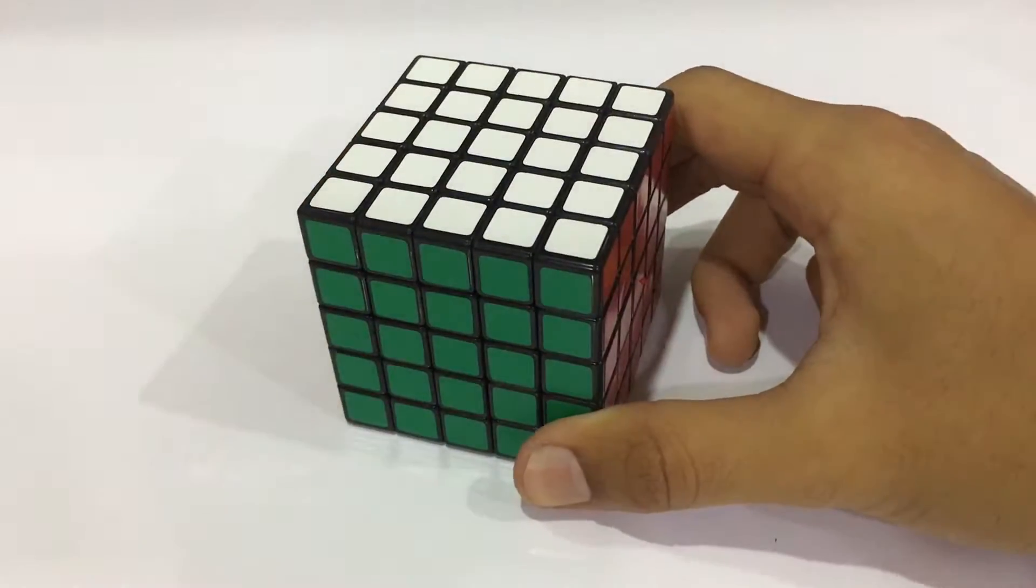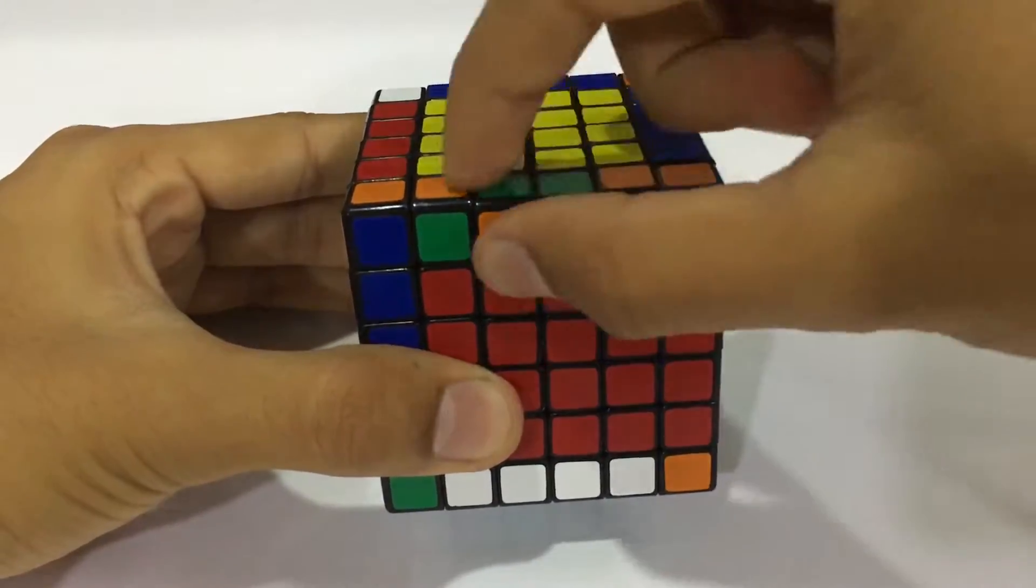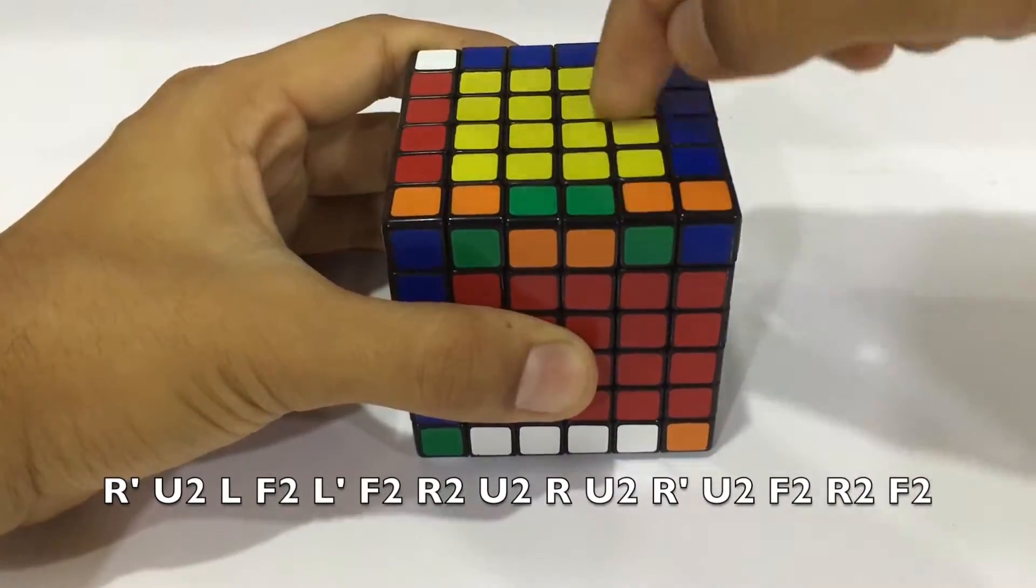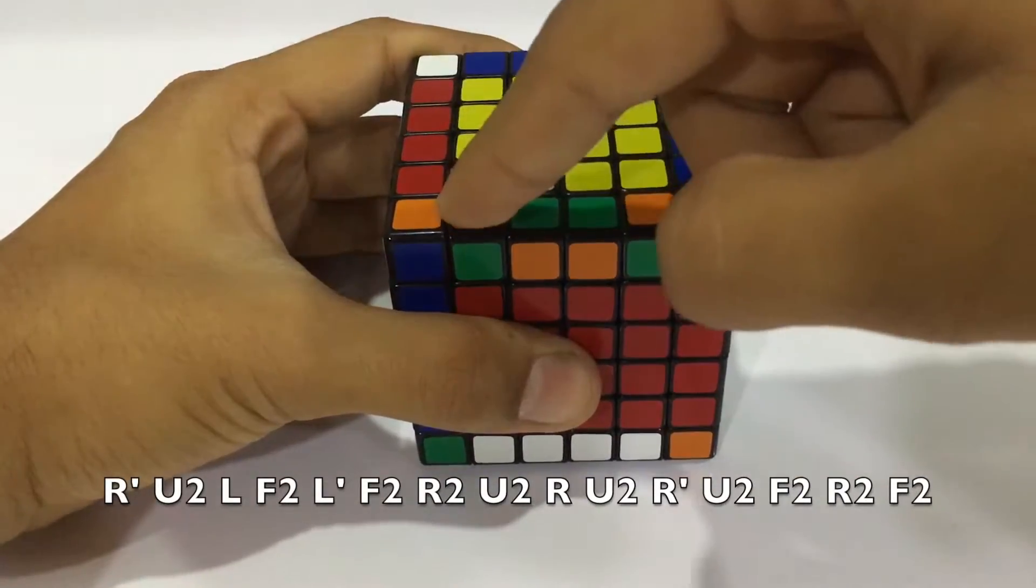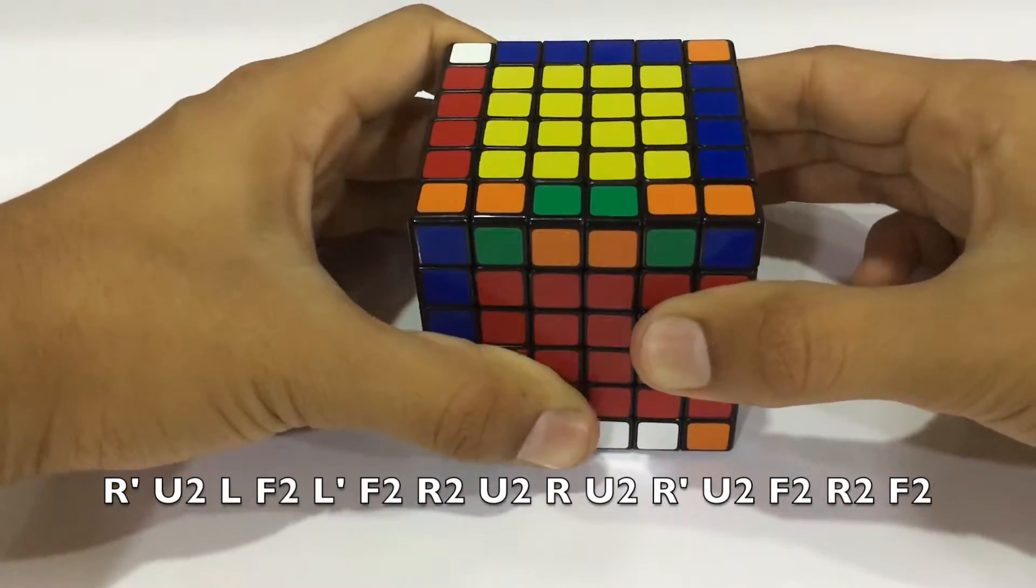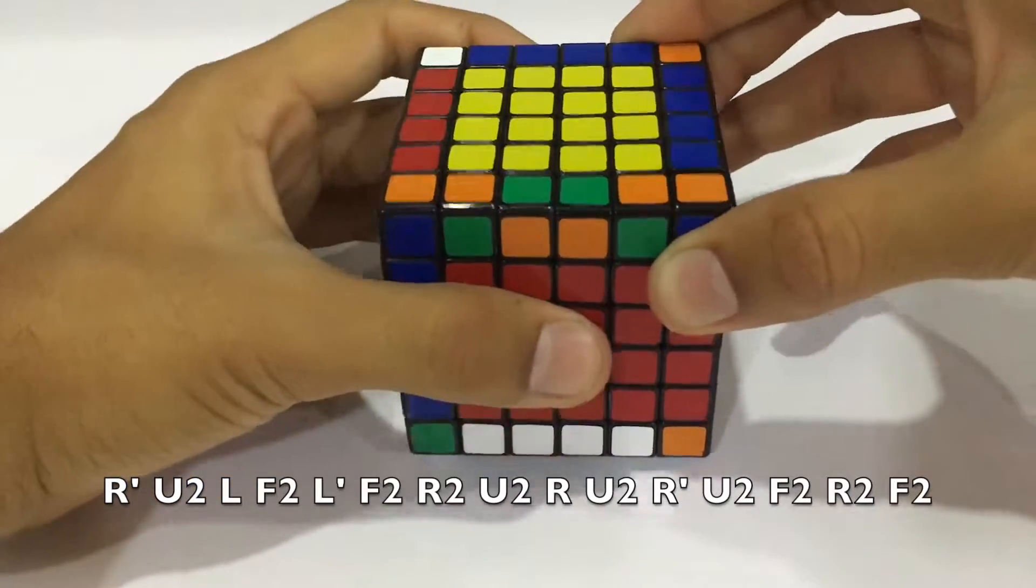Now the same case when it comes to 6x6. So when it comes to the 6x6, you get an edge parity like this. So it is simple, you use the same algorithm given over here. We just use the inner right and the inner left over here, and this algorithm will just flip these two pieces. So you use the same algorithm.